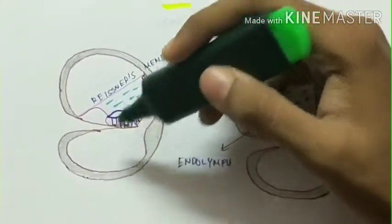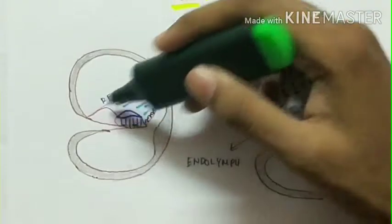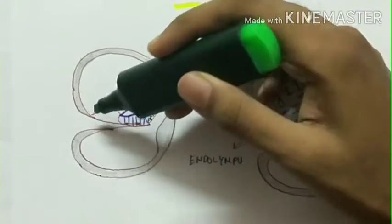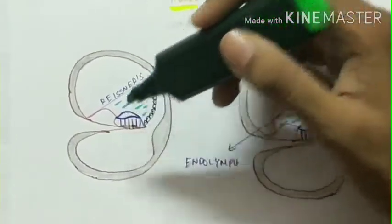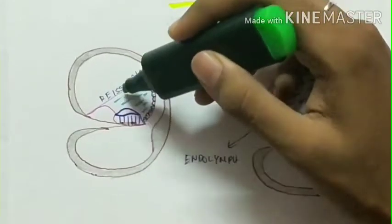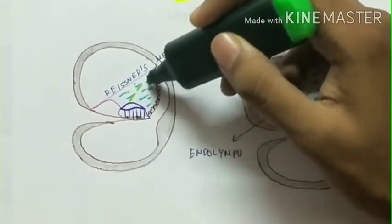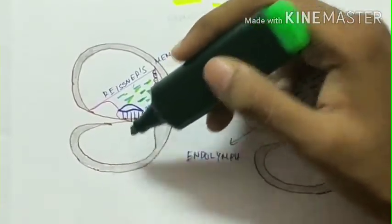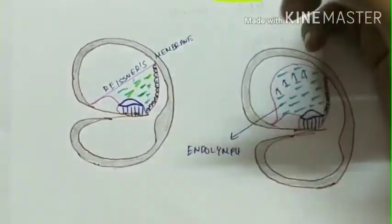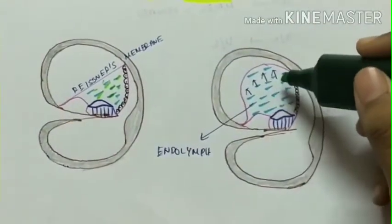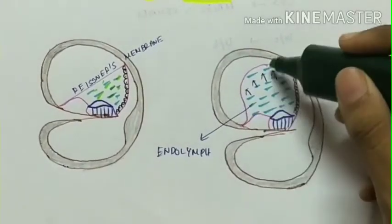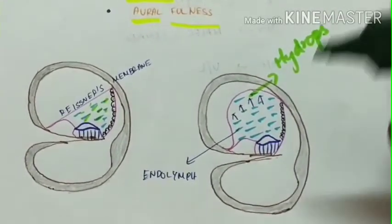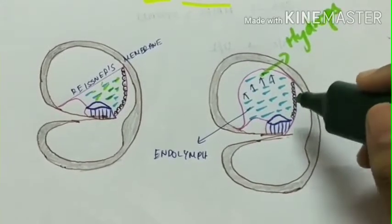This is an image of the inner ear in which this is the membranous labyrinth which has three membranes: Reissner's membrane, stria vascularis, and the basilar membrane, within which is the endolymph. All this is the endolymph present in the scala media. This is scala vestibuli, scala media, and scala tympani. Because of the increase in the endolymph there is formation of hydrops, leading to Meniere's disease also called endolymphatic hydrops.